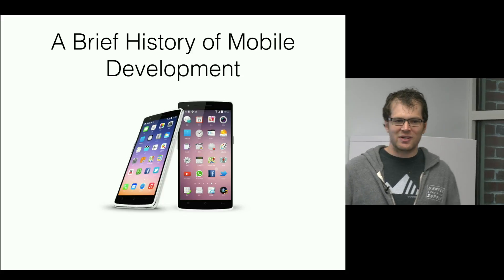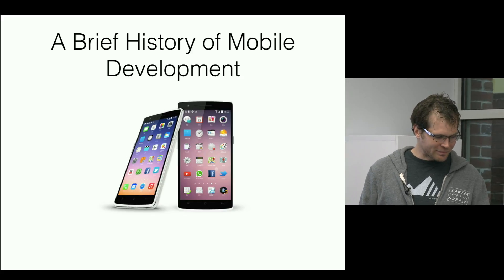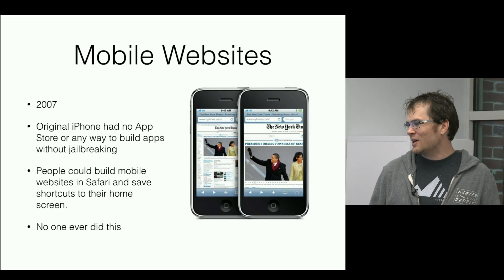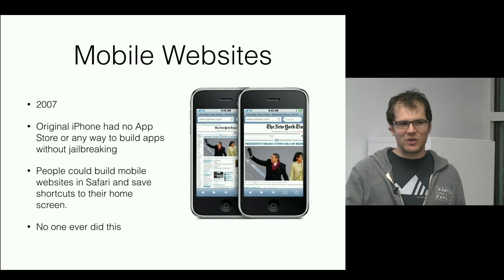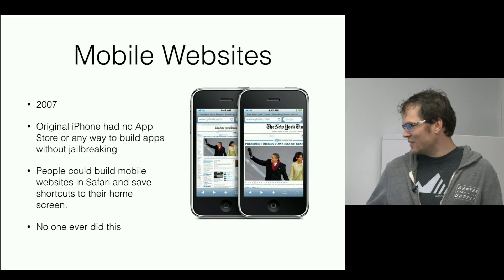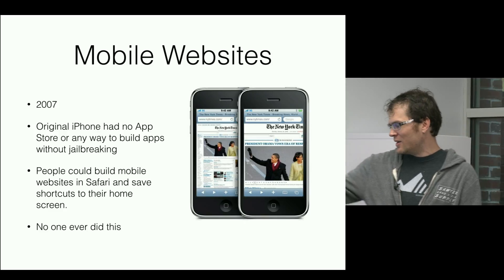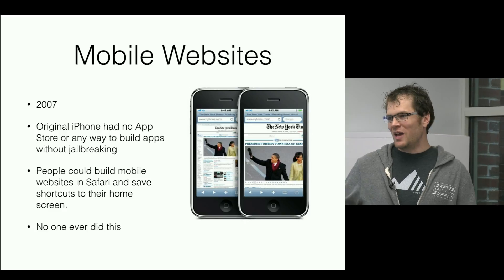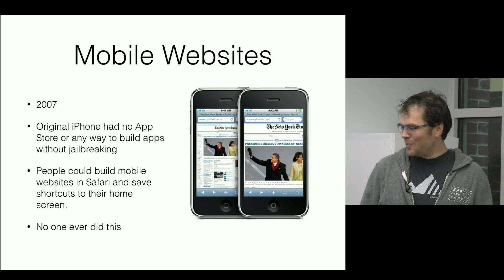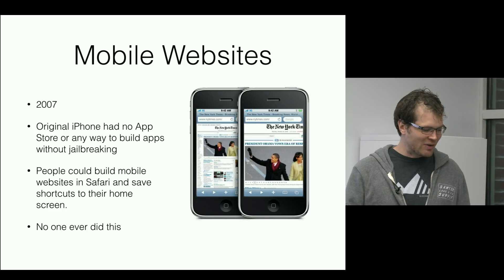Let me give you a brief history of mobile development. Back in 2007, the iPhone came out, and when it came out you couldn't really build apps on it — all you could do was build websites. Most people didn't build special websites for it right away, so you basically just went to a desktop website on your phone and had to do a lot of pinching and zooming. There was a way to save a website to your home screen, but no one ever really did that.